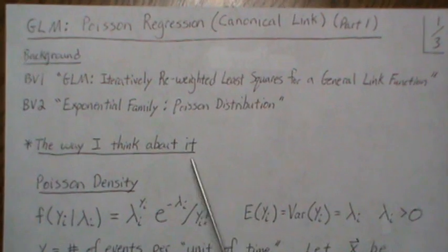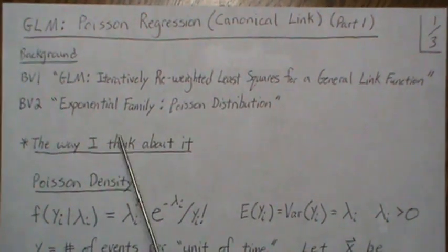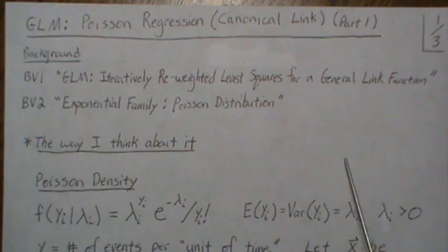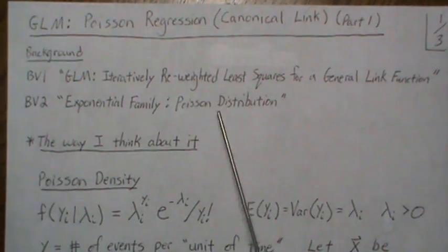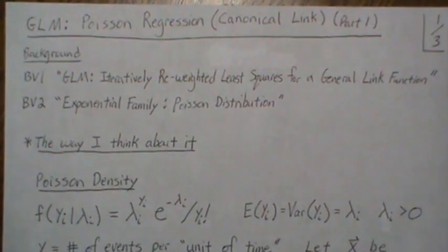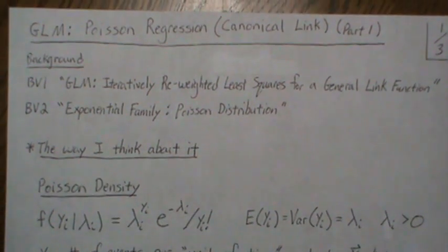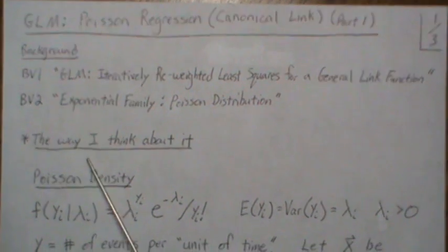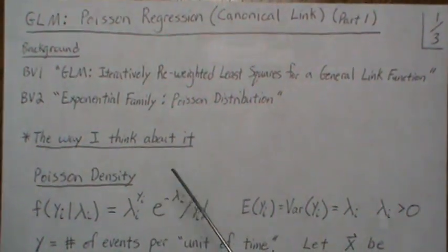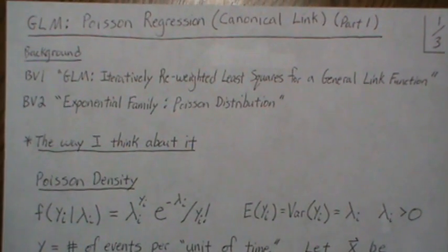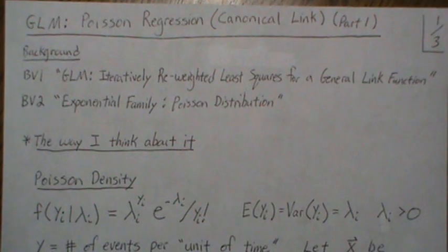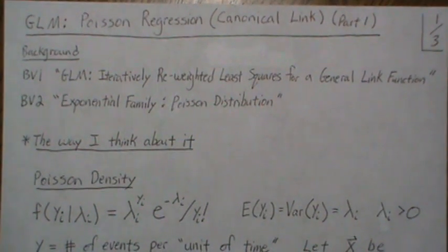I have two background videos, and on middle of page two we're going to follow BV1 exactly, and then we're going to make reference to the Poisson distribution throughout, so BV2 would be a good one to read. Now I'm going to first spin the page to show you the way I think about Poisson regression, and then we'll use the machinery of generalized linear models to solve it using iteratively reweighted least squares regression.